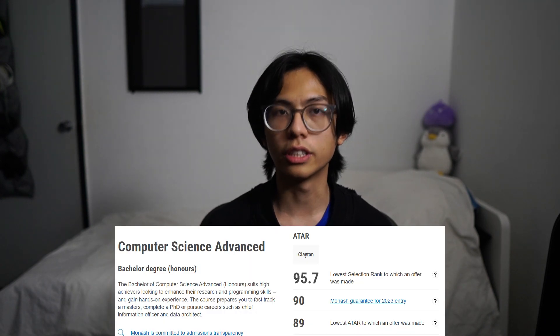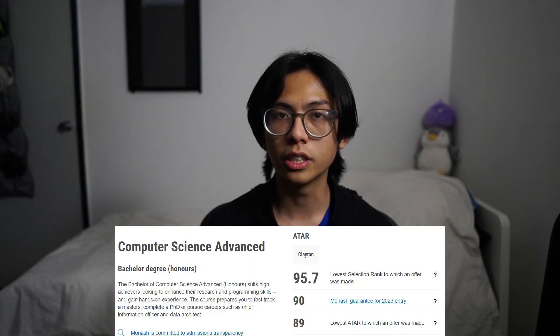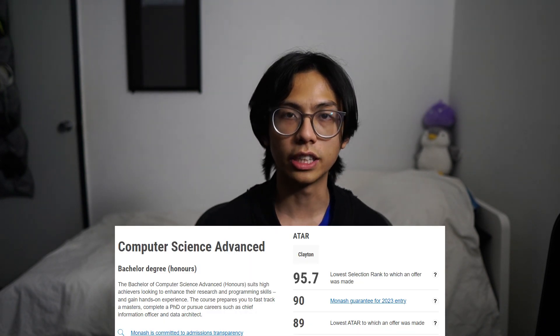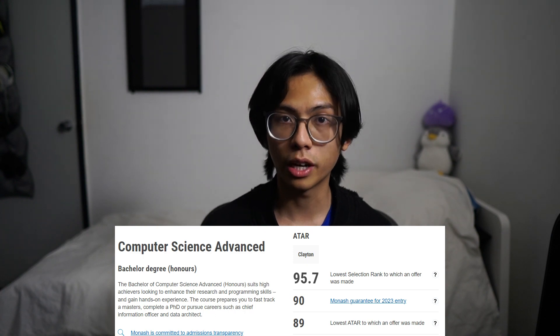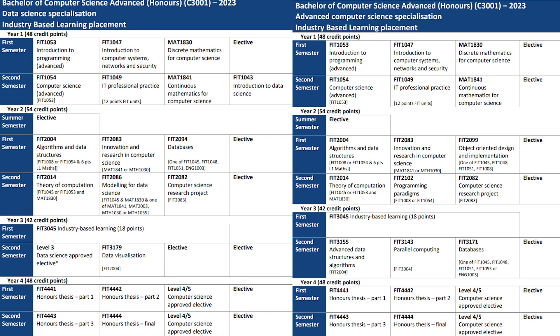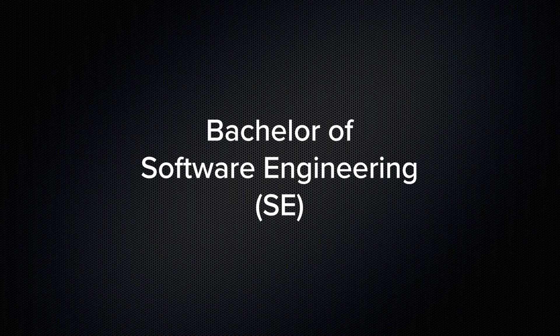There's also an additional degree option called the CS Honours Program, which has a strong emphasis on research, has a higher entry requirement, and will add an additional eight units or one year to your studies. Finally, we have Software Engineering or SE.